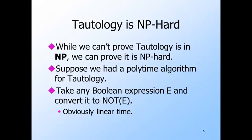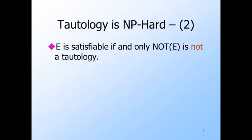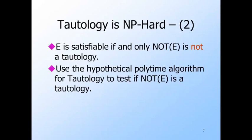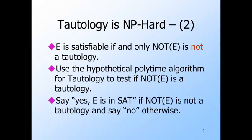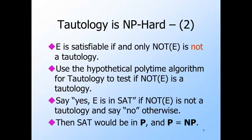Notice that E is satisfiable if and only if not-E is not a tautology. So use the hypothetical algorithm for the tautology problem to tell whether or not not-E is a tautology in polynomial time. Then just complement the answer — say E is in SAT whenever the answer is that not-E is not a tautology, and say E is not satisfiable whenever not-E is found to be a tautology. That would be a polytime algorithm for SAT, which would show P equals NP. That is all we need for the proof that tautology is NP-hard.